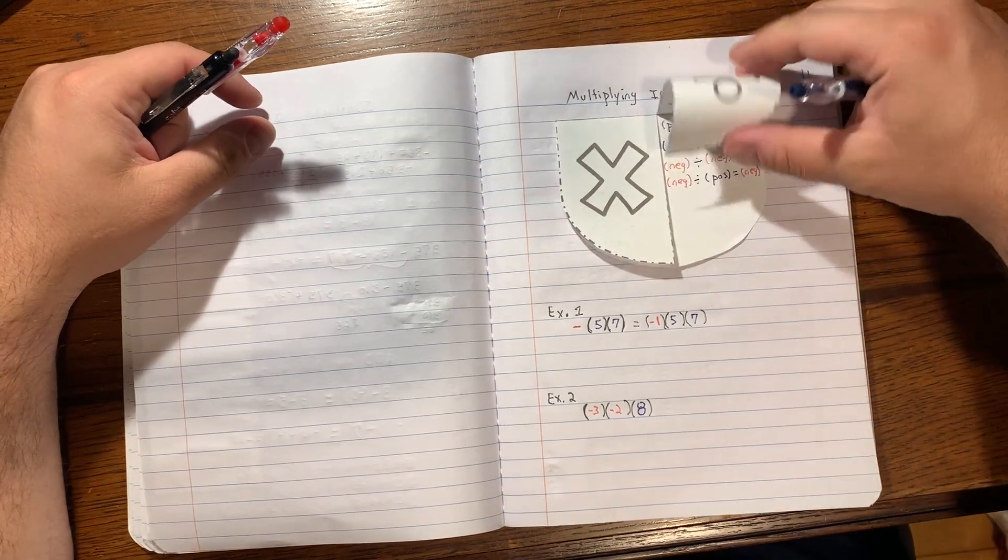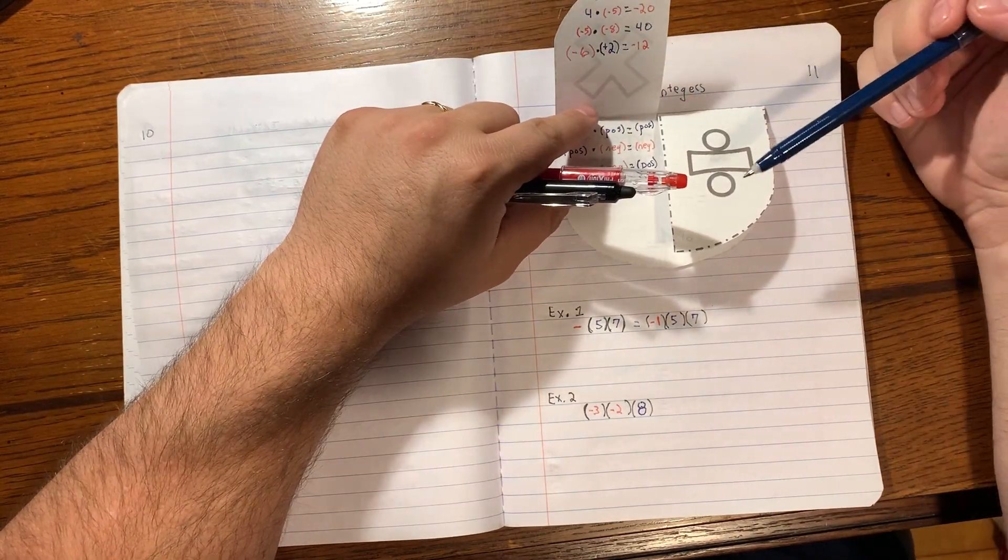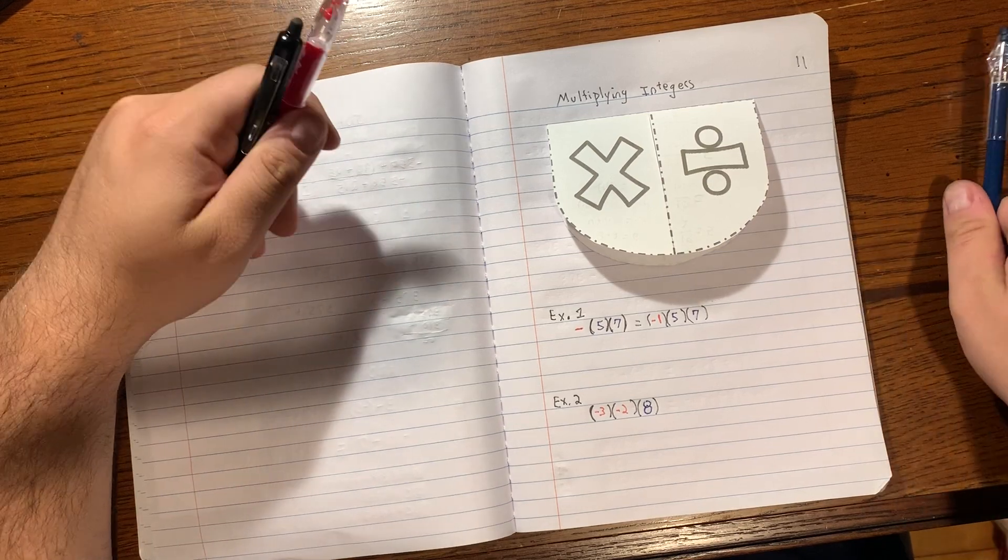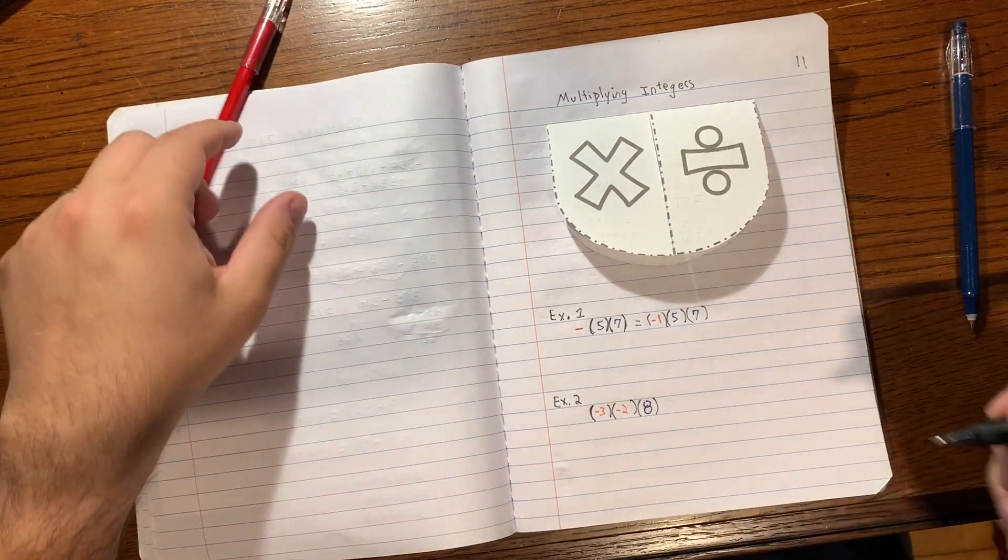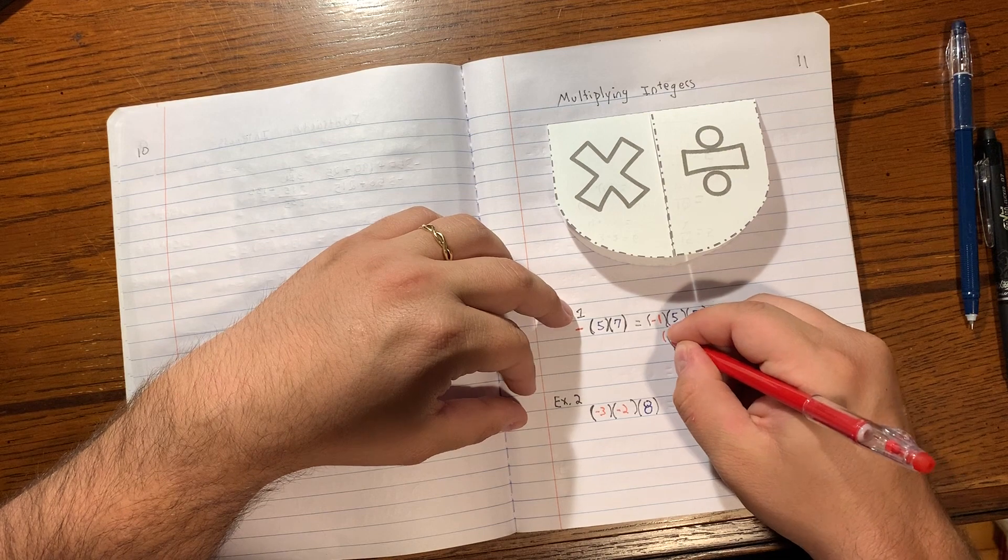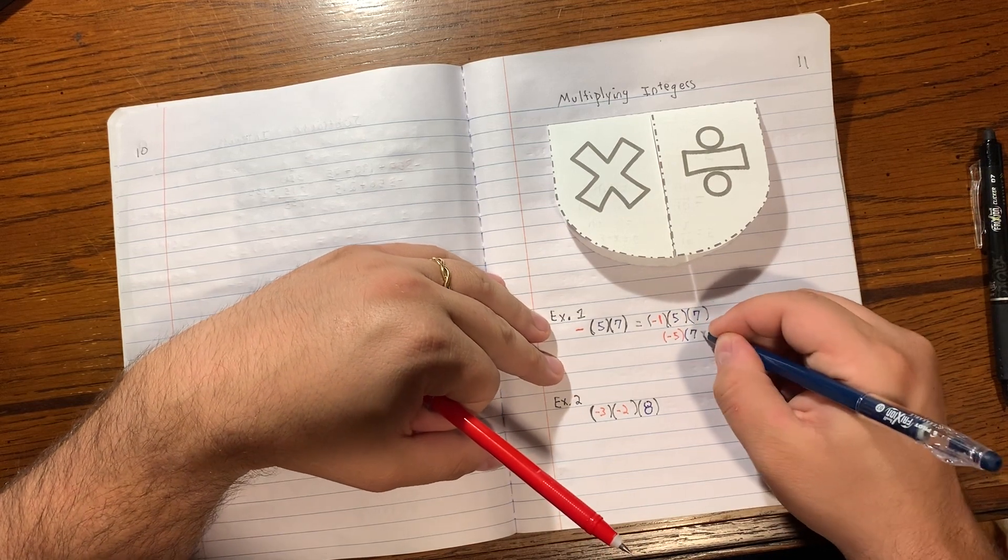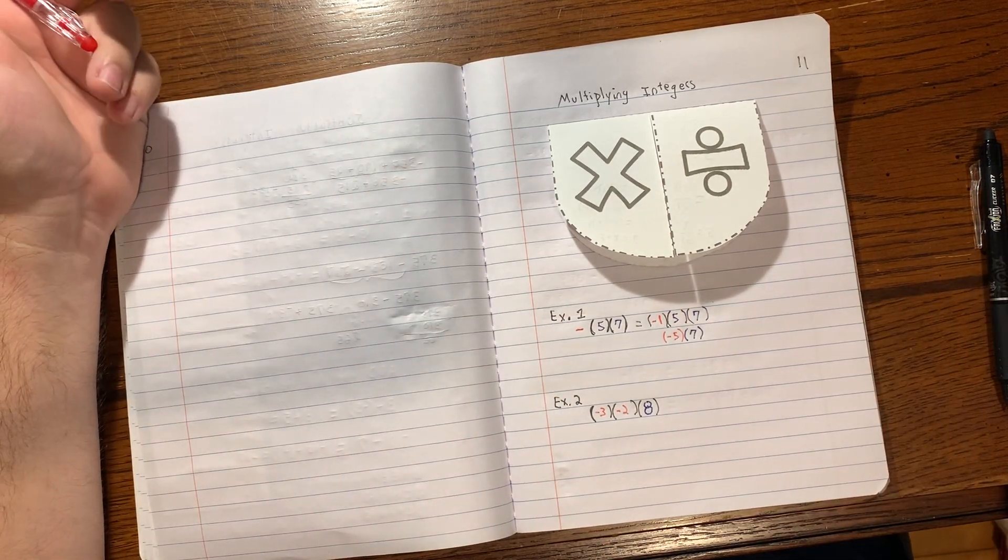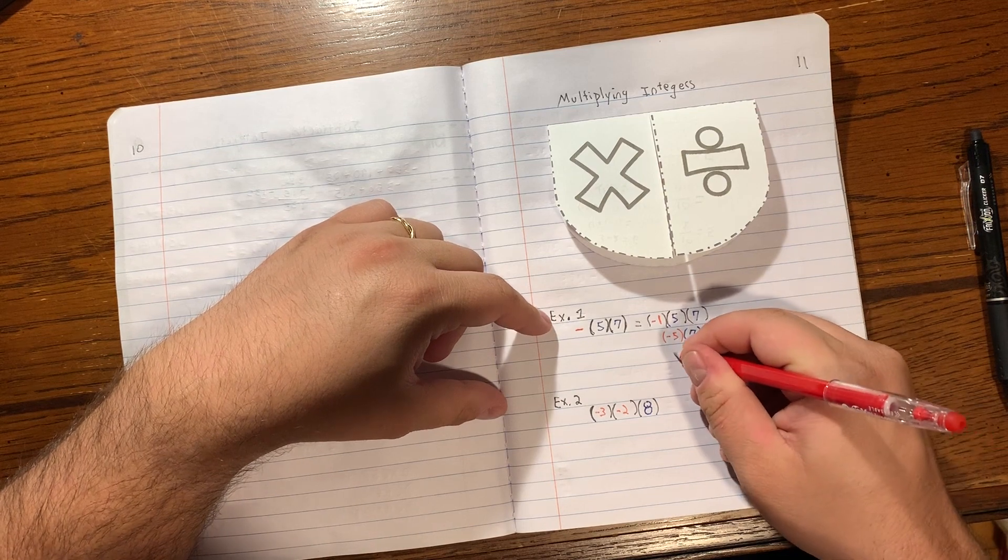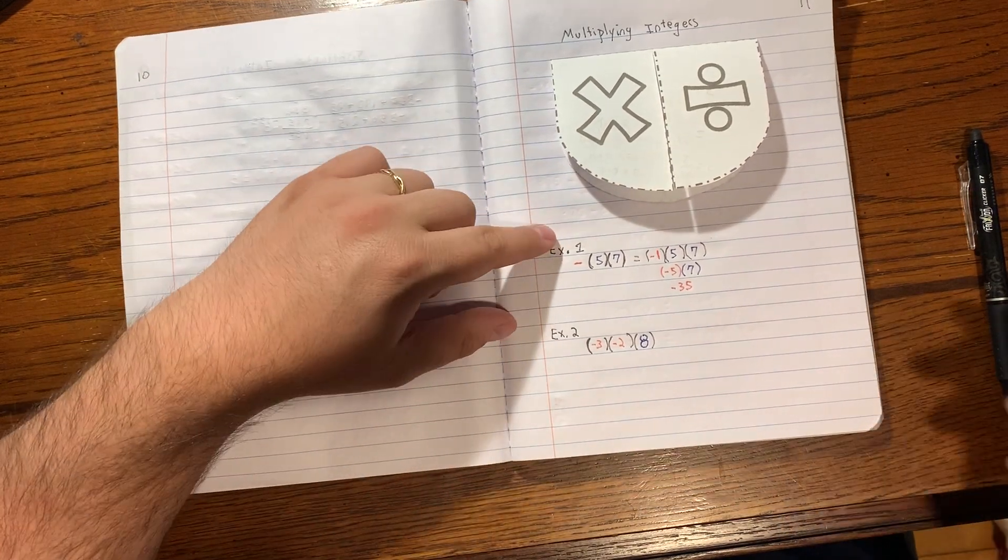So it means the same thing as if I were to open this up and put a dot right here, okay? They mean the same thing. So when we multiply three numbers, we're gonna do two at a time. So negative one times five, that's a negative times a positive, that's gonna give me a negative five. And then I'm gonna bring down this positive seven. And now I have a negative times a positive again, so that's gonna be negative 35. Negative five times seven is negative 35.